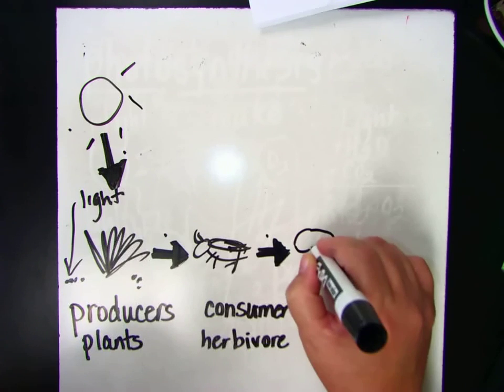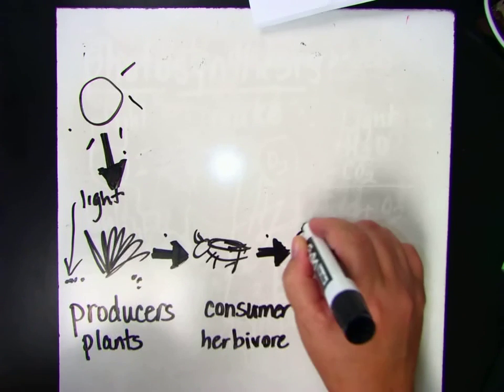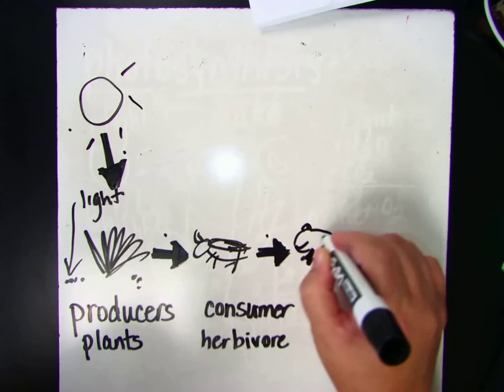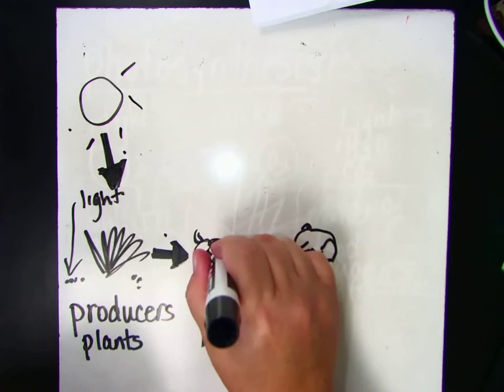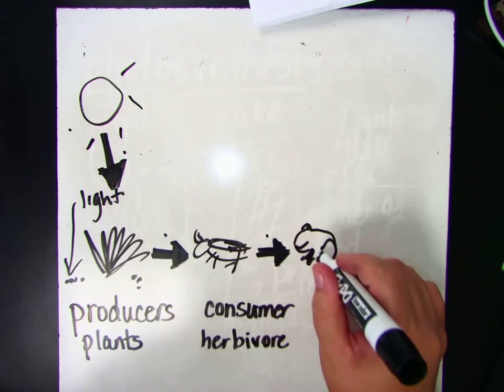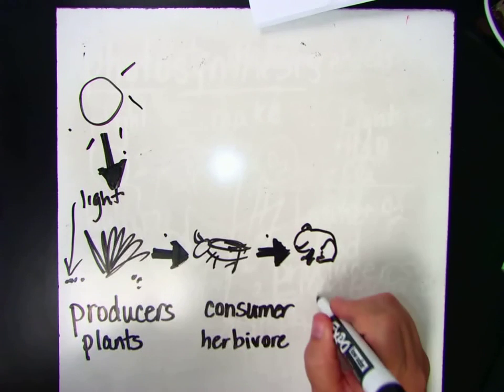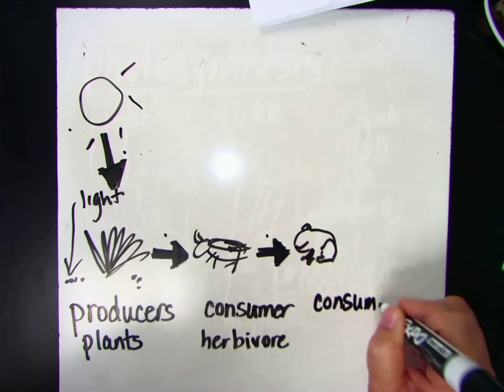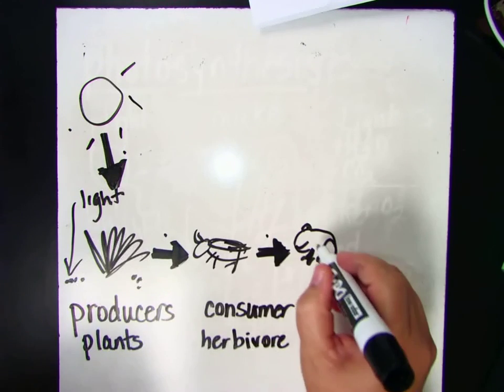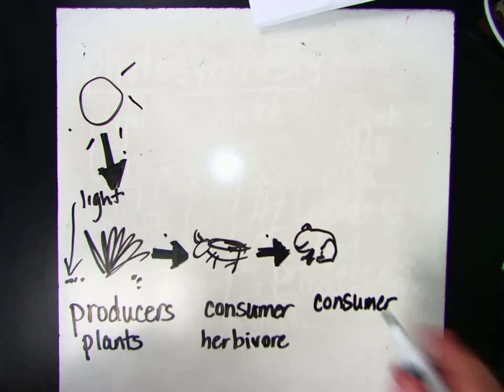And, you know, I'm just such a great artist. My frog will look just beautiful. Ribbit, ribbit. And the frog eats the grasshopper, so he's a consumer as well. But he is actually a consumer of the second degree because he eats a consumer.